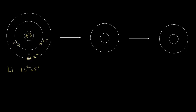If we apply enough energy, we can pull away this outer electron. We call this the first ionization energy. To pull away that electron takes approximately 520 kilojoules per mole.